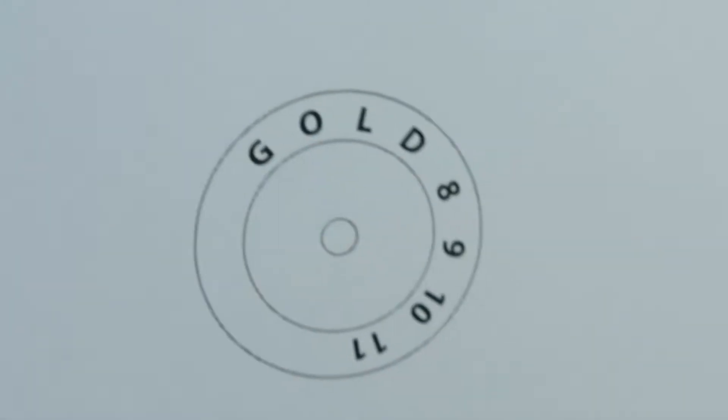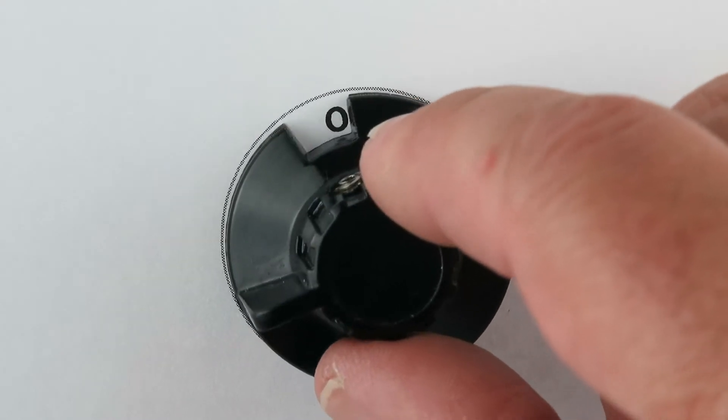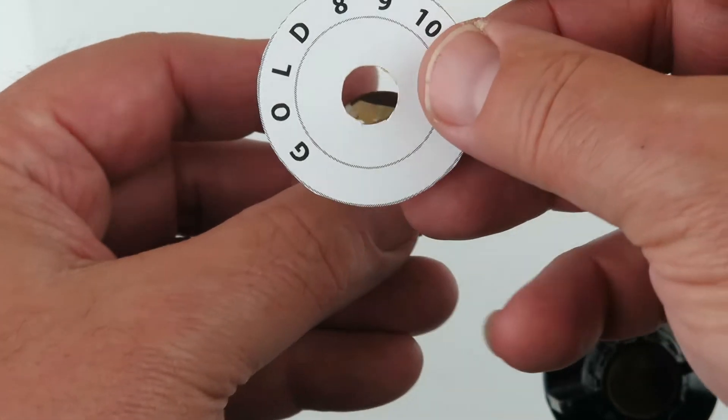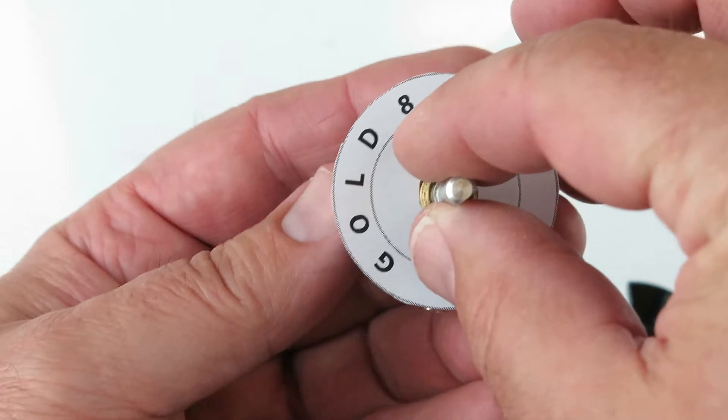So I created this little graph. It goes over this and as you turn the knob, that will be revealed. So I just took this, put it there, put it through that hole.